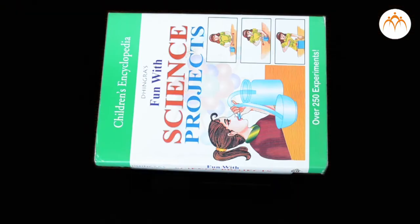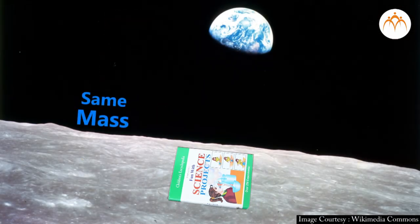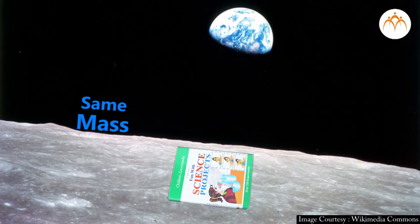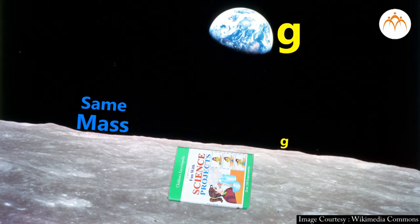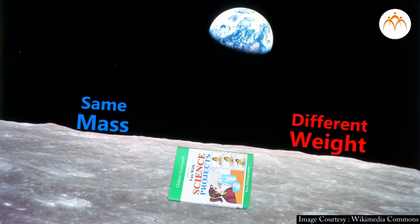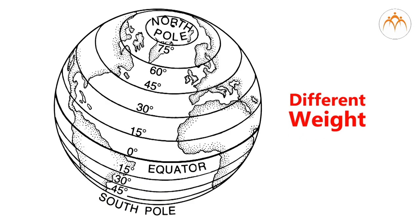If we take this book to the Moon, it will still have a mass of 6 kg, but how much will it weigh? The acceleration due to gravity on the Moon is six times less than that on Earth. Your weight changes as you go from planet to planet. Your weight is also slightly different if you go to different parts of the Earth, such as the poles or the equator.